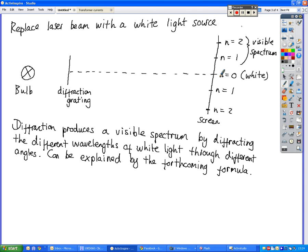So the diffraction grating produces a visible spectrum by diffracting the different wavelengths of white light through different angles. And we'll explain that later once we look at the diffraction grating formula.